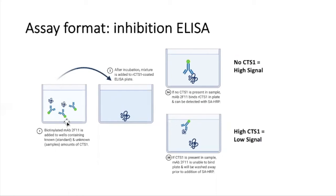Our lab has developed an antigen-based assay using an in-house produced monoclonal antibody. This antibody is incubated with a specimen of interest — in our case, human serum — then added to a plate coated with recombinantly produced endokinase 1, or CTS1. CTS1 is a highly immunogenic protein made by the valley fever fungus, so if this protein were present in serum, this antibody would bind that protein and would not be able to bind the protein in the plate.